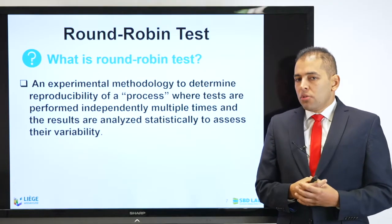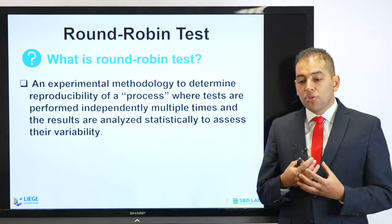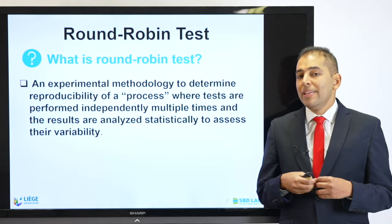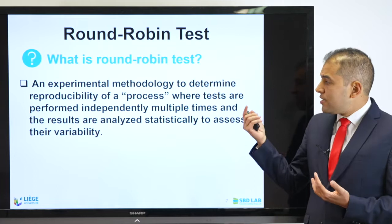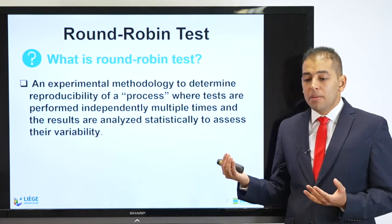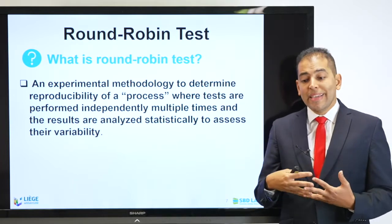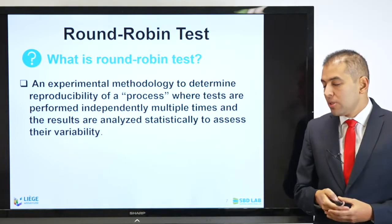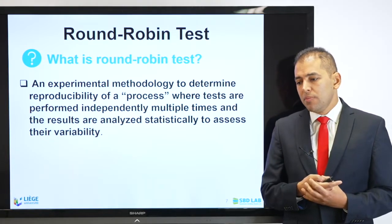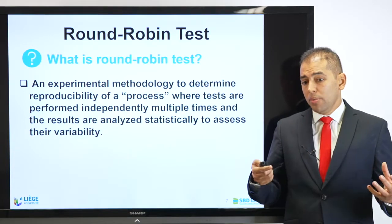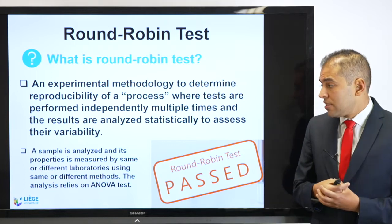Now let's go into the round-robin test. What is actually the round-robin test? It's an experimental methodology to determine reproducibility of a process. You have a test, a protocol, a method, and you want to reproduce it, where these tests are performed independently multiple times and the results are analyzed statistically to assess their variability. It's important to keep this in mind because today we have variation of research outcomes and we need to validate that on a global scale, and it's important to benefit from the round-robin test in this sense.